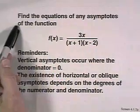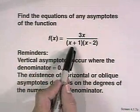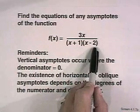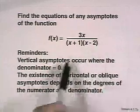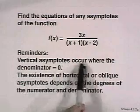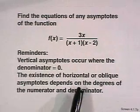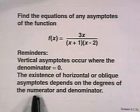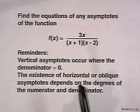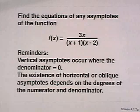Other important characteristics of a rational function include the x and y intercepts. Recall that a y intercept is found by substituting 0 in for x, and that an x intercept is found by substituting y equals 0. Now here's a problem for you to try: find the equations of the asymptotes of f of x equals 3x divided by the quantity x plus 1 times the quantity x minus 2. This function is already in lowest terms. Vertical asymptotes occur when the denominator equals 0, and horizontal or oblique asymptotes depend on the degrees of the numerator and denominator. Turn off the tape to do your work and then back on to see the solutions.